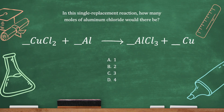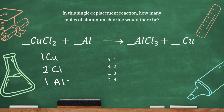In this single replacement reaction, how many moles of aluminum chloride would there be? Let's go ahead and balance the chemical equation. On the left I've got one copper, two chlorine, and one aluminum. On the right, I've got one copper, three chlorine, and one aluminum.